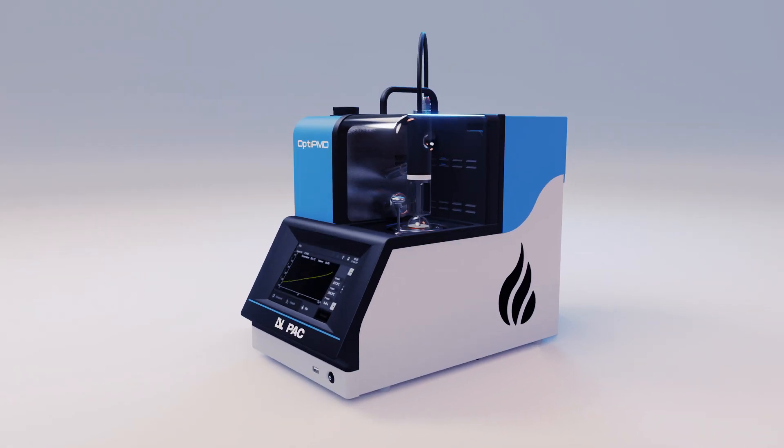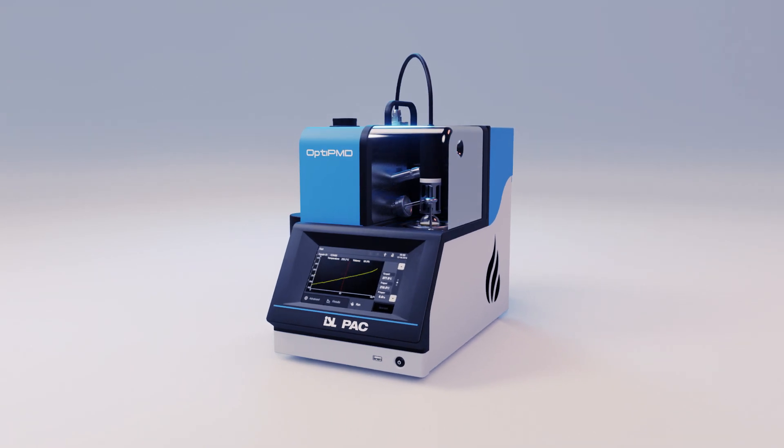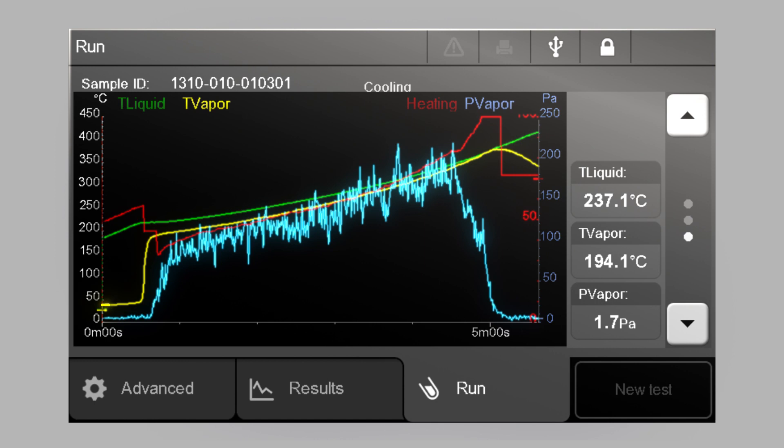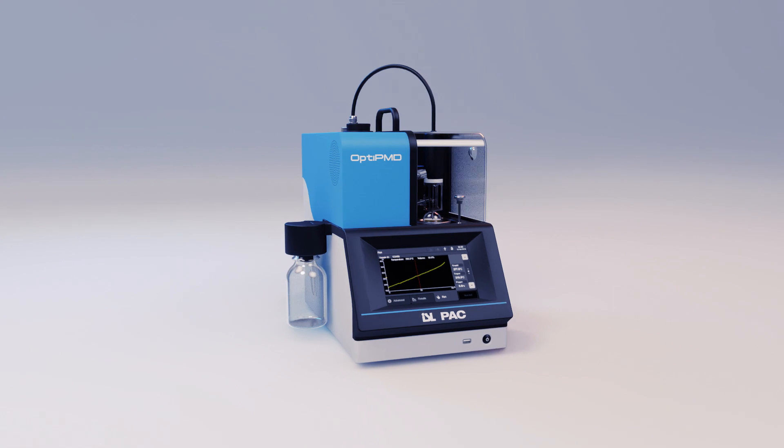OptiPMD reduces the distillation time not only by using just 10 milliliters of sample. Distillation speed is also the result of measuring both temperatures as well as the pressure, and then adjusting the heating power. OptiPMD can perform the fastest physical distillation in the market, thanks to its patented measurement technique.